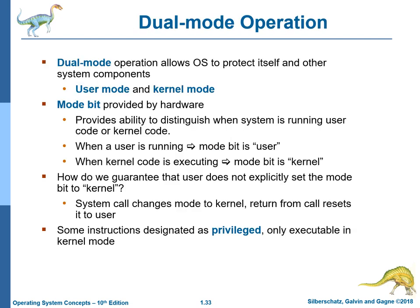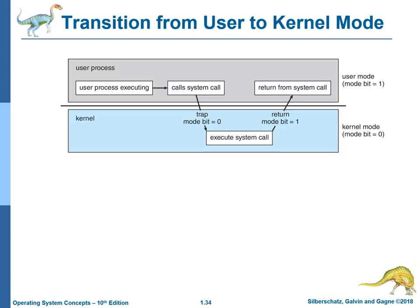Dual mode operation allows the operating system to protect itself and other system components. The two modes are user mode and kernel mode. A mode bit provided by hardware provides the ability to distinguish when the system is running user code or kernel code. When a user is running, the mode bit is user; when kernel code is executing, the mode bit is kernel. A system call changes the mode to kernel, and return from the call resets it to user. Some instructions are designated as privileged, only executable in kernel mode. This diagram shows the transition from user to kernel mode.